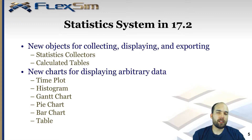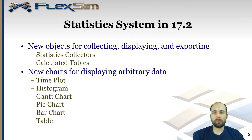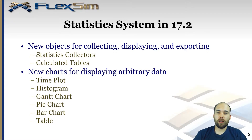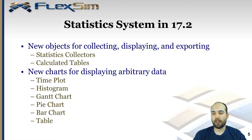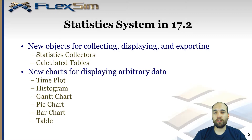To resolve these issues while maintaining the good features we already have, we've upgraded the statistics system in version 2017 update 2. We've made two new objects for collecting, displaying, and exporting: the statistics collector and the calculated table. We've also made new charts for displaying the data in those two objects — a time plot, a histogram, a Gantt chart. The key difference is that these charts have separated the task of gathering data, which is now the role of the statistics collector and calculated table.